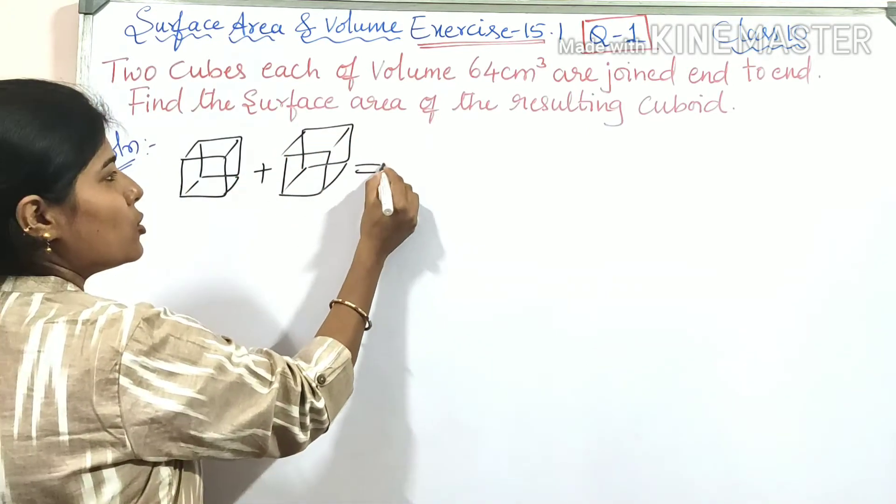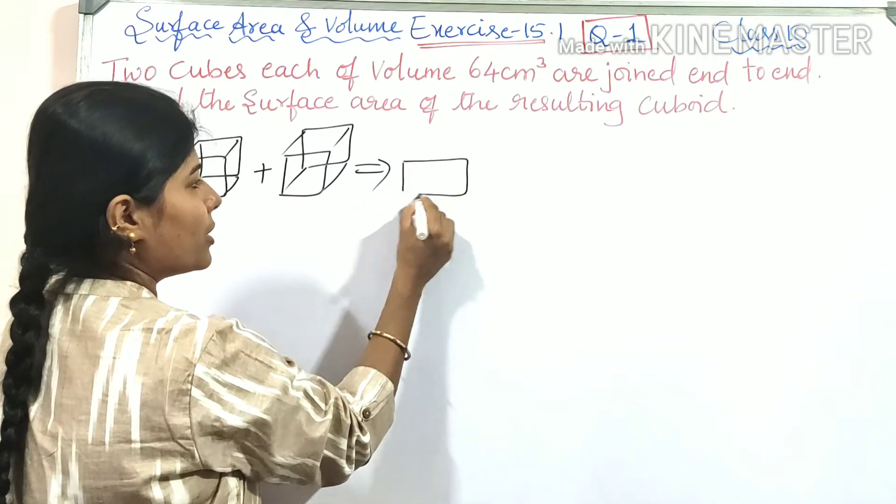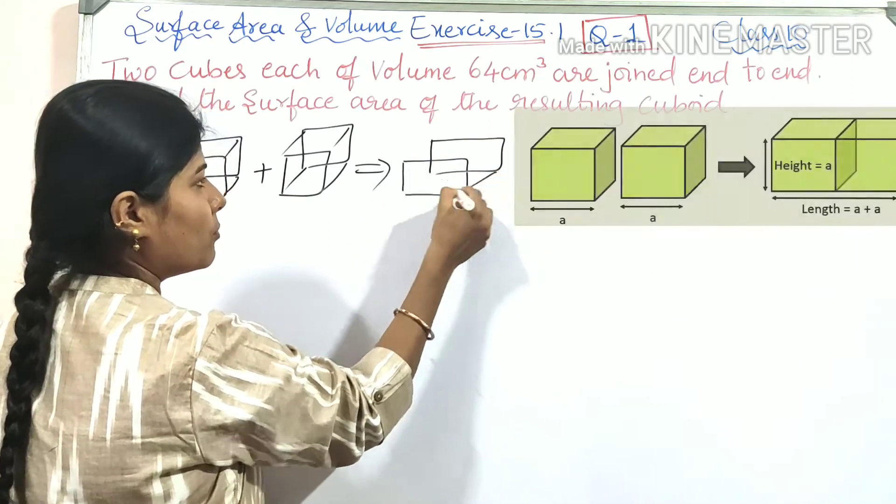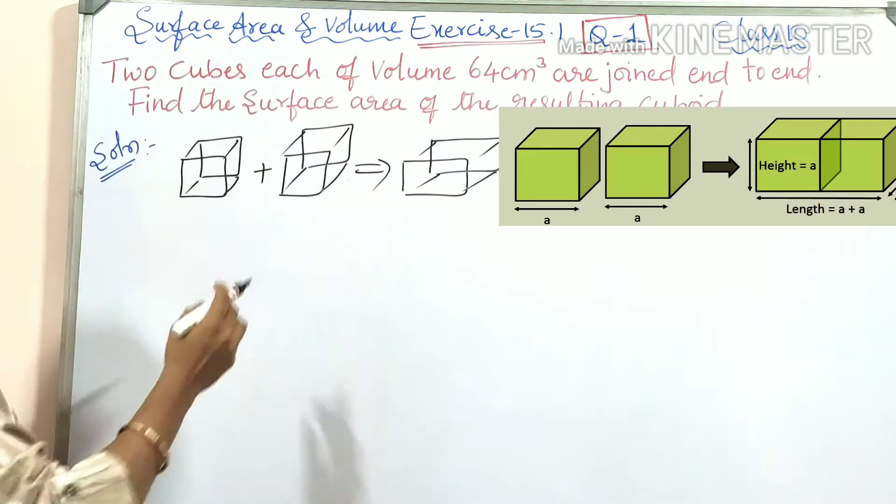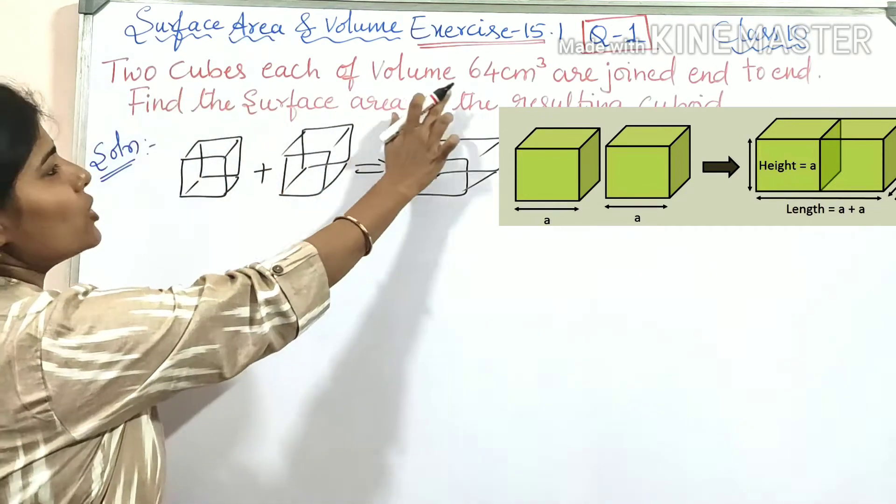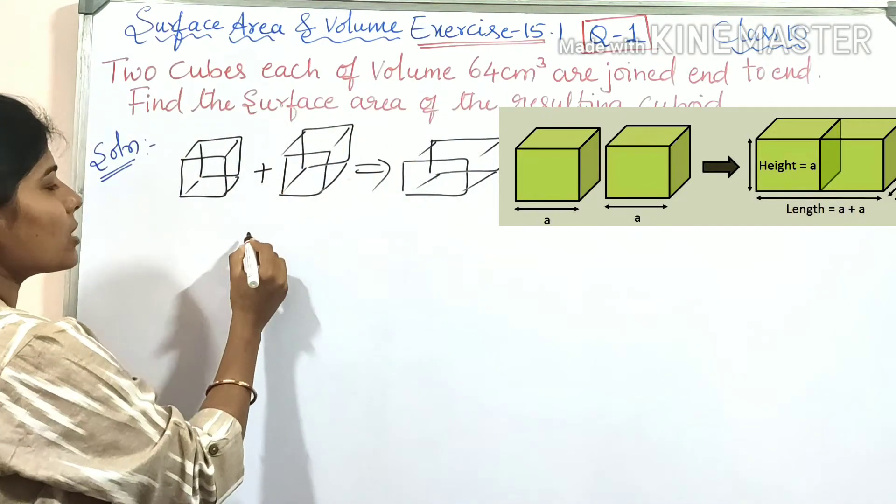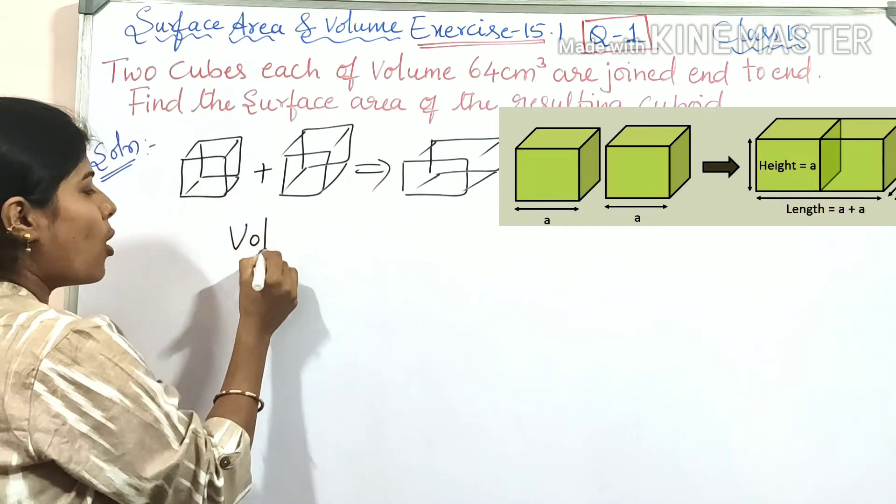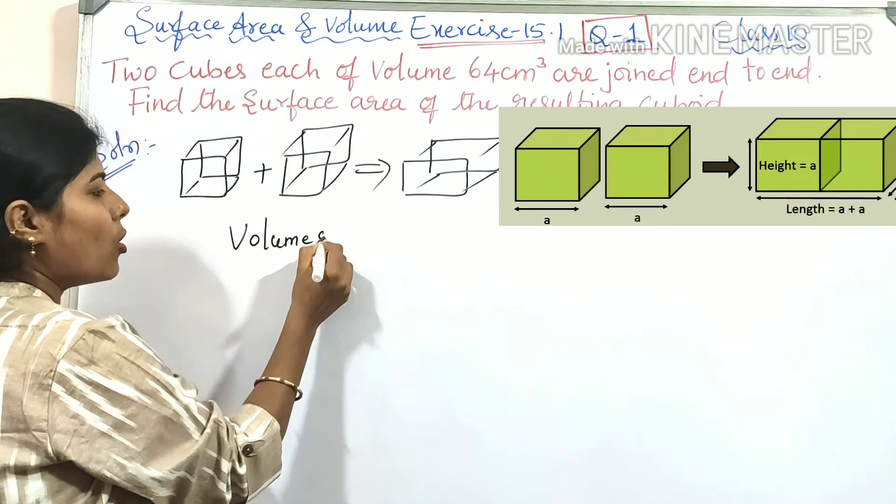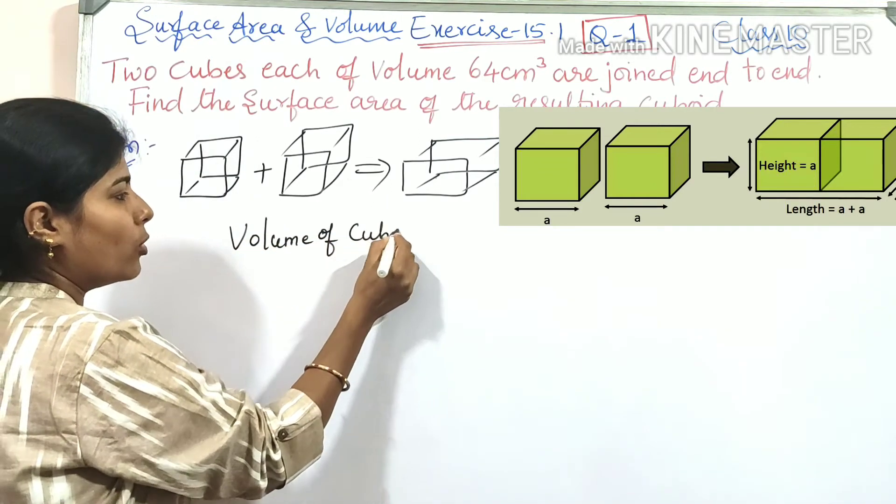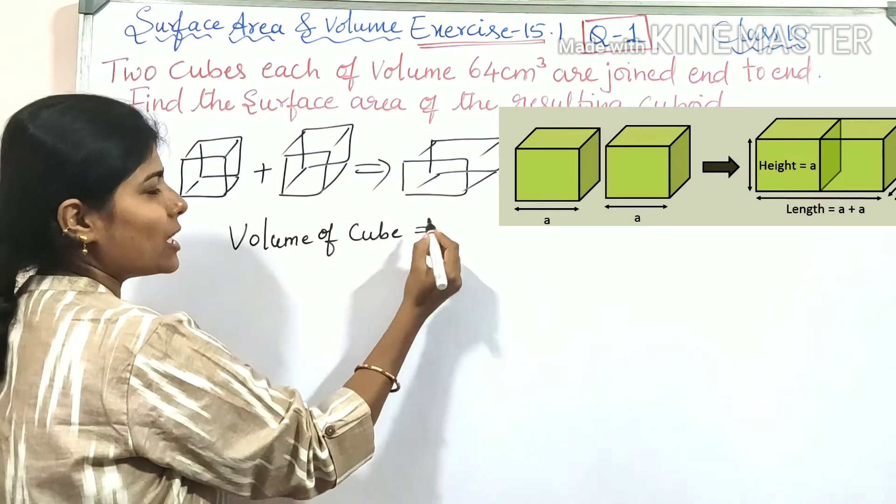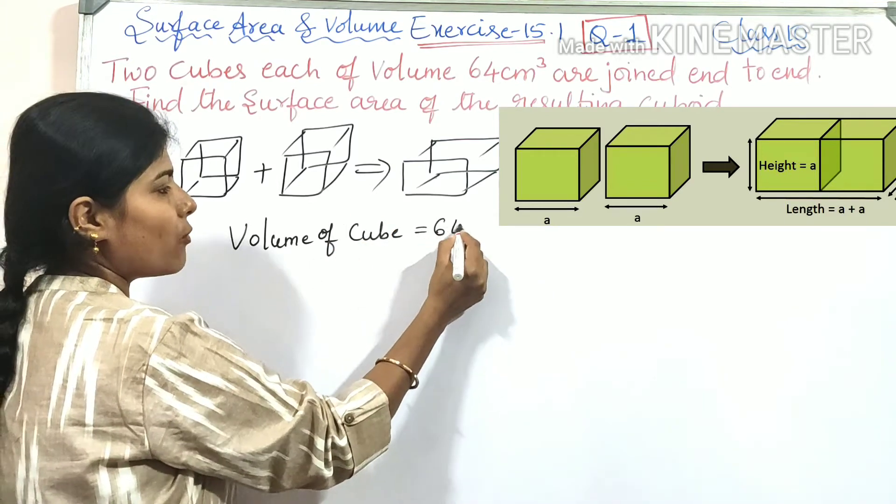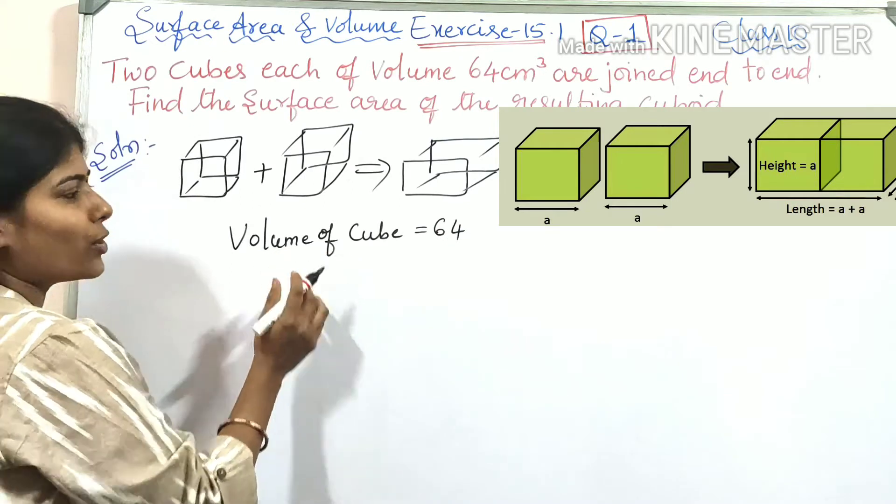They form a cuboid. The given information: two cubes, each of volume 64 centimeter cube. That is, volume of cube equals 64. What is the volume of cube formula?